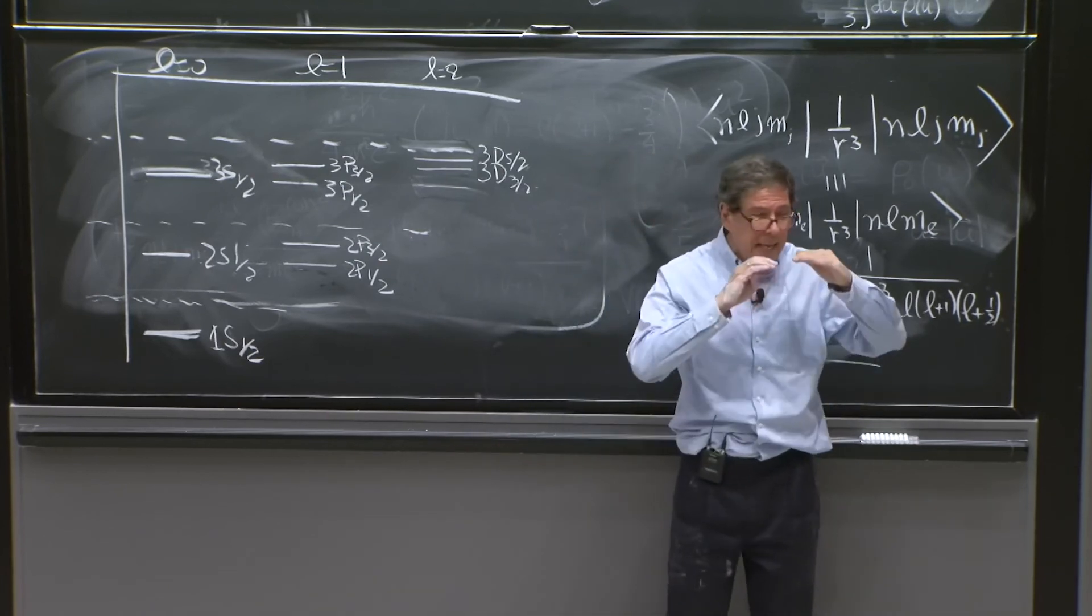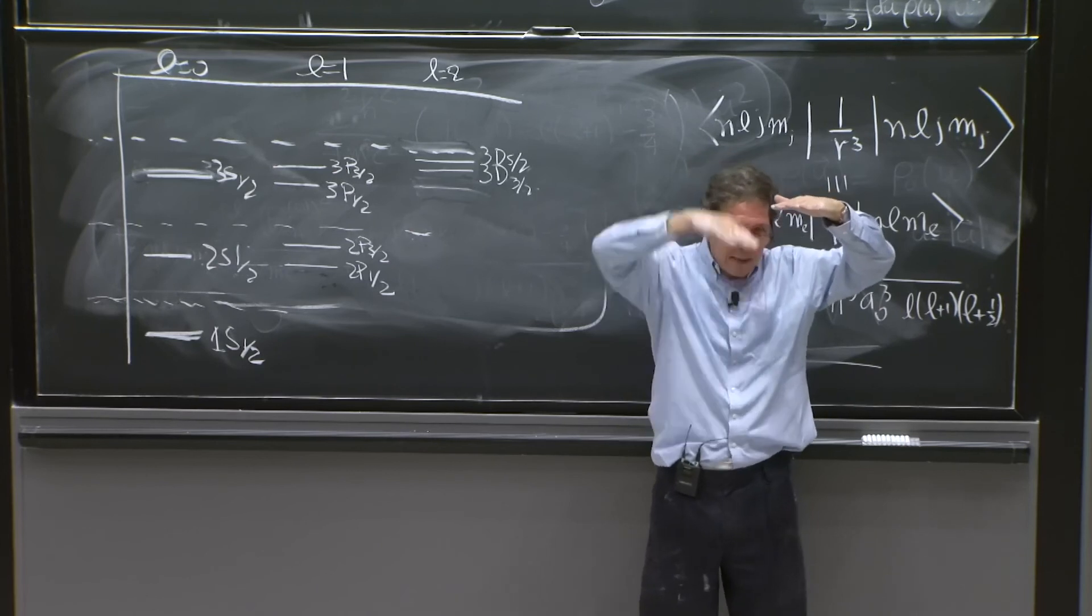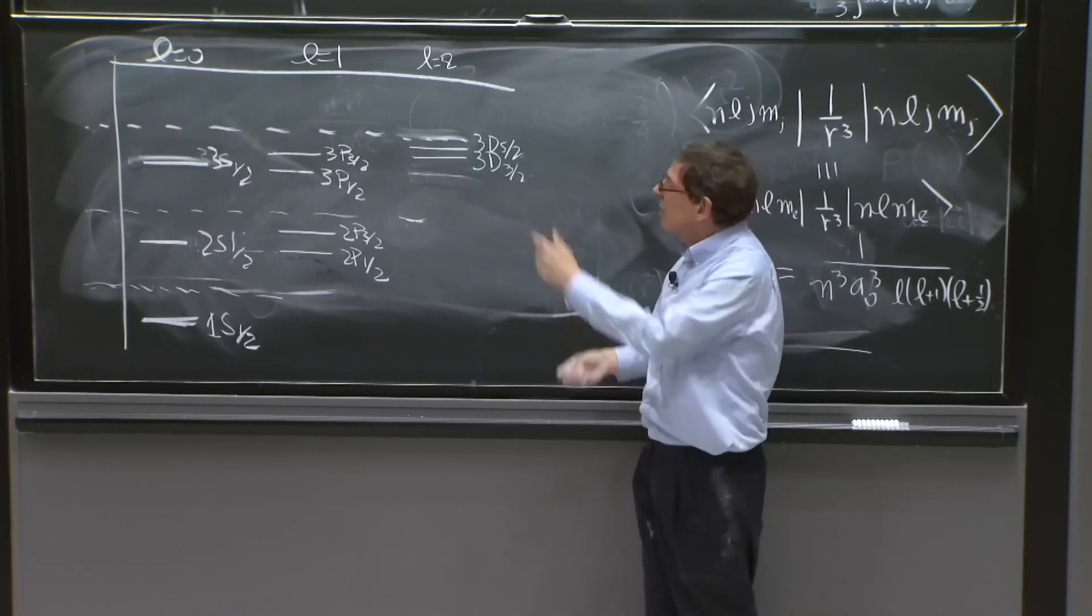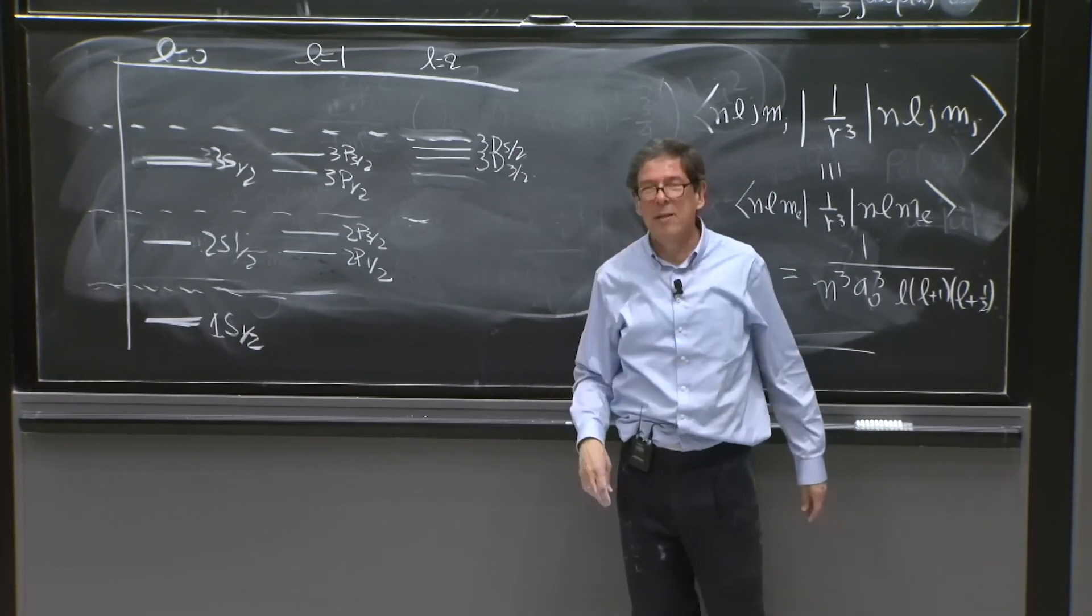Moreover, the j multiplets are not split. Every j multiplet differs. It has a collection of states with different mj, but mj doesn't appear. So this is your fine structure of hydrogen atom.